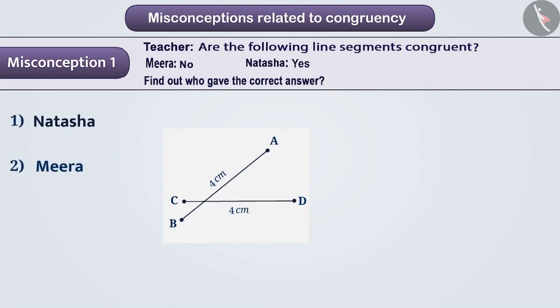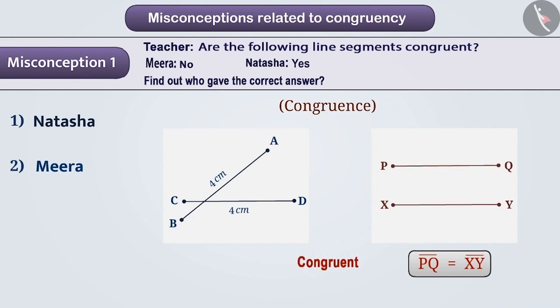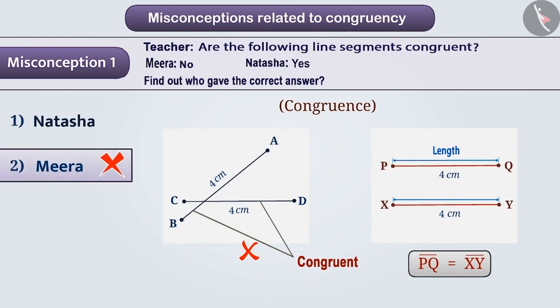When teaching congruency of line segments, parallel line segments are used to show that the line segments are equal. Because of this, it becomes a misconception of children that two line segments are congruent only when their lengths are equal and they are parallel. With this understanding, they think that the given line segment is not congruent. Hence, they consider Meera's answer to be correct and select option 2. But option 2 is an incorrect answer.